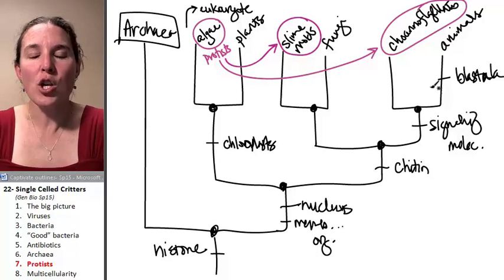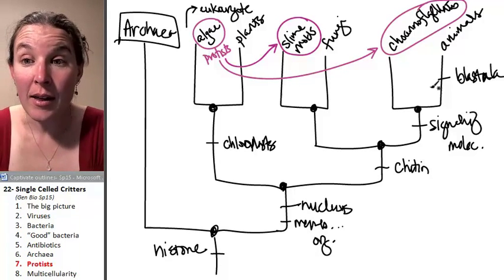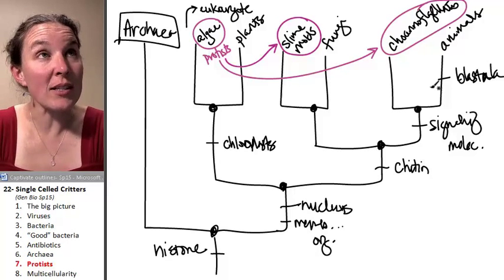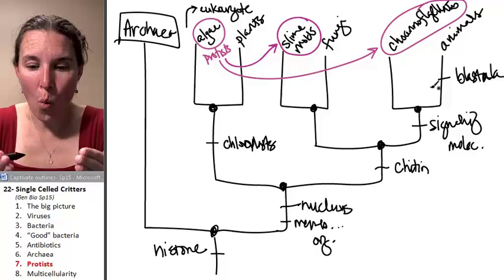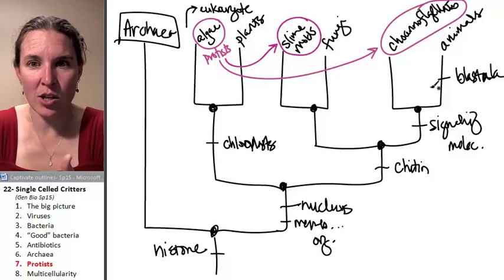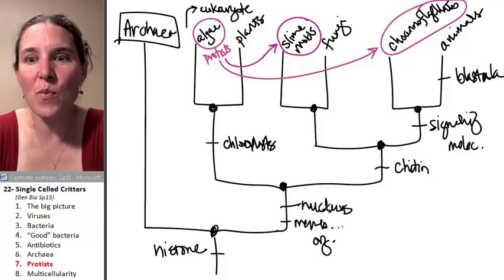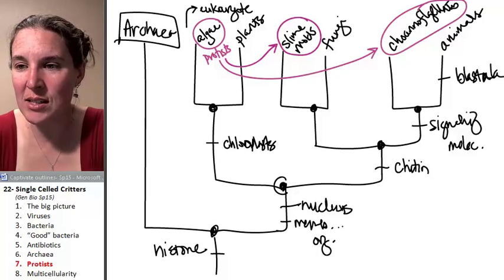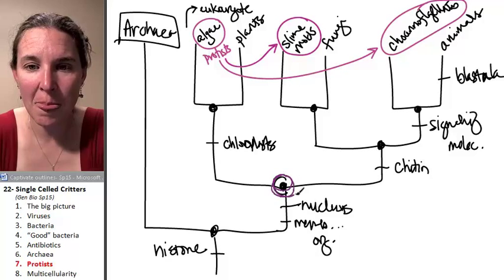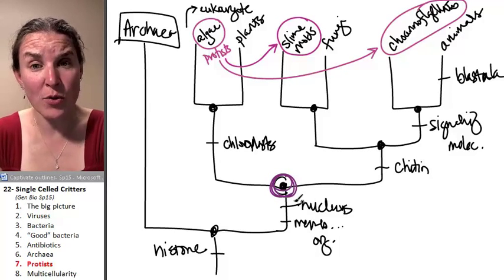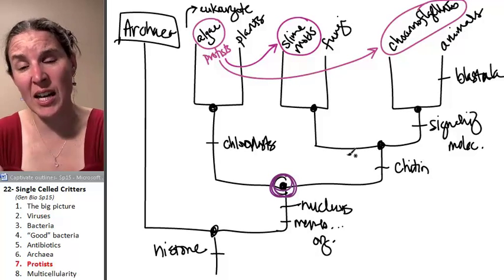All right, so protists, you can't put them on the cladogram in one place. Not all protists share one ancestor just amongst themselves. The most recent common ancestor of the protist is this thing right here. And that most recent common ancestor is also the most recent common ancestor of plants, fungi, and animals.